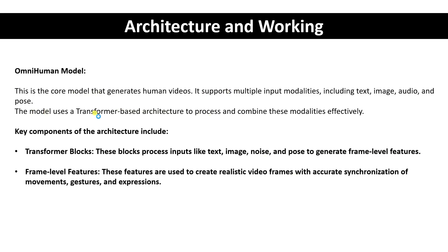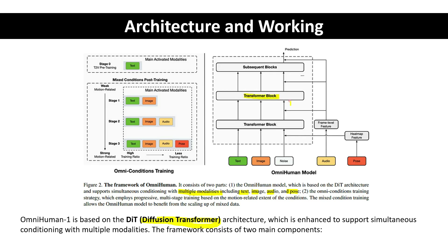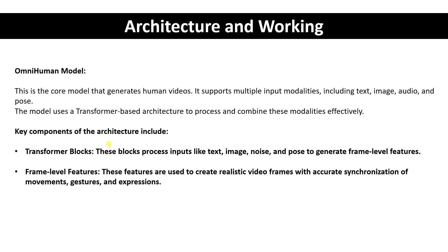In the OmniHuman model, two key components are used: the transformer block and the frame label features. The transformer block processes inputs like text, images, noise, and poses to generate frame label features. These features are then used to create realistic video frames with accurate synchronization of movement, gestures, and expressions.